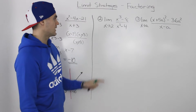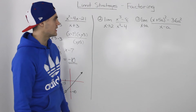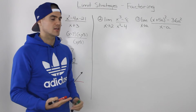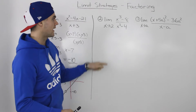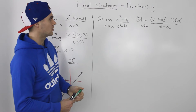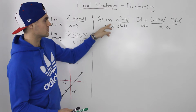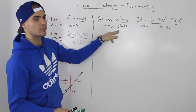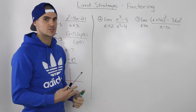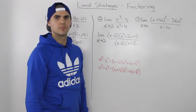Moving on to the second example: the limit as x approaches 2 of x cubed minus 8 all over x squared minus 4. The first thing you always check — can you make a direct substitution? If we substitute 2 for x, we get the limit in indeterminate form: 0 over 0, and we can't divide by zero.